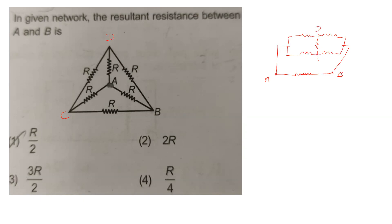Now, if you look at point A, point A is connected, and point B is connected to point B. Between A and B there is one resistance. Between C and A is one resistance.